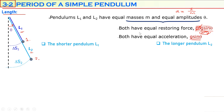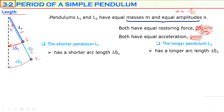If we check the arc lengths traveled by each bob: the shorter pendulum, L1, will have a shorter arc length, delta-s1. But the longer pendulum, L2, has a longer arc length, delta-s2. So the bob of the shorter pendulum travels a shorter distance, while the bob of the longer pendulum will travel a longer distance.